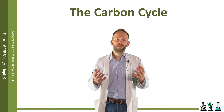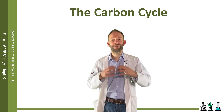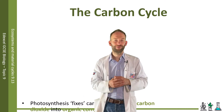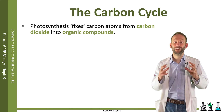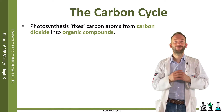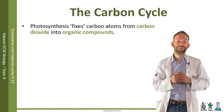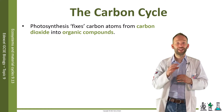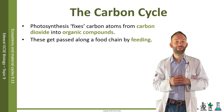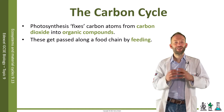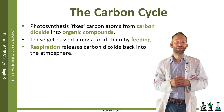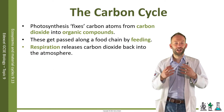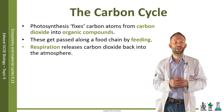So, in general, there are some key processes involved in the cycling of carbon. First, synthesis fixes carbon atoms from the carbon dioxide in the air into organic compounds. They get passed along a food chain by feeding, and then they get released back into the atmosphere again by respiration, turning carbon atoms back into carbon dioxide.